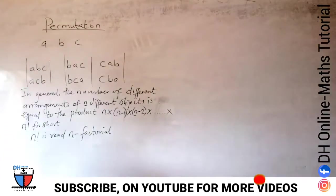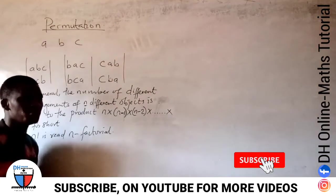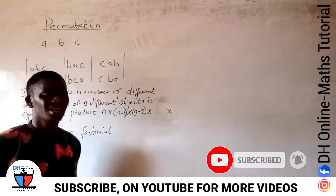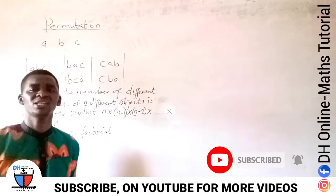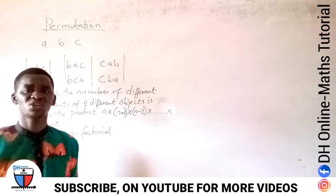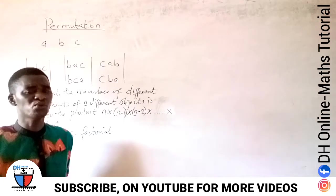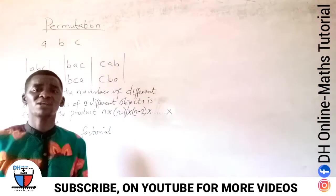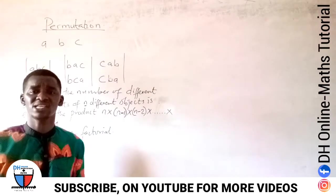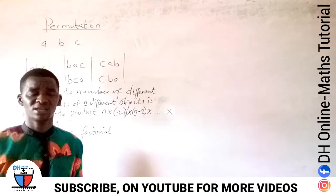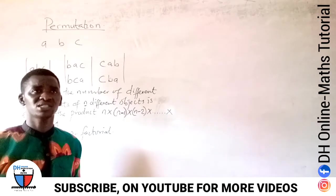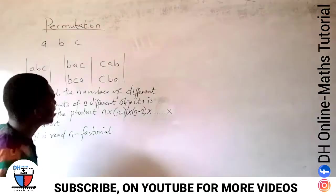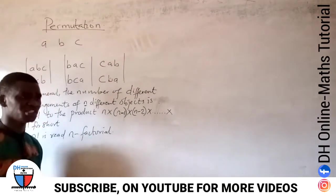Now when we say permutation, what do we mean? Permutation is simply showing us the number of possible ways an object can be arranged.